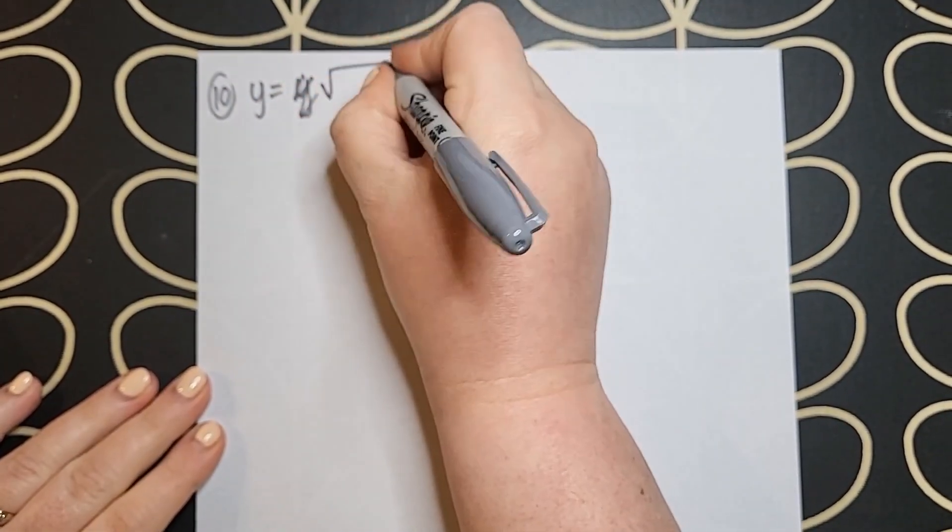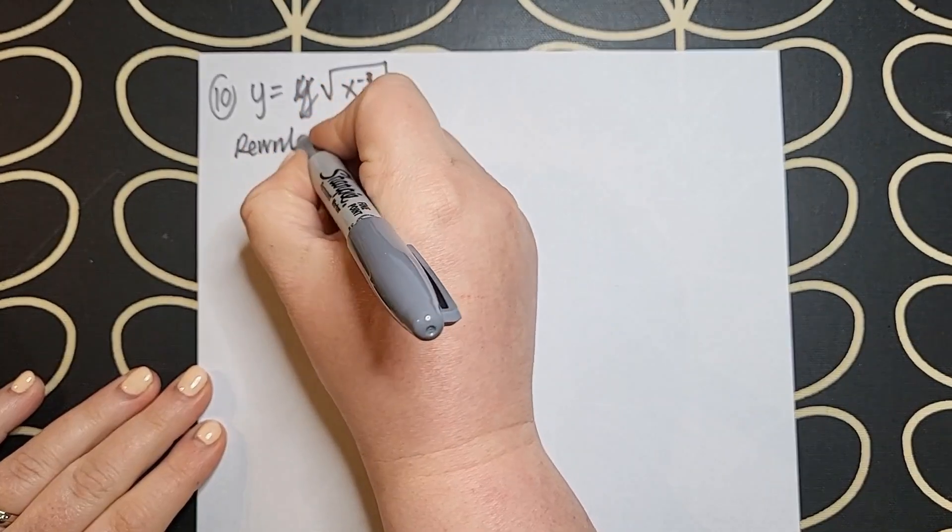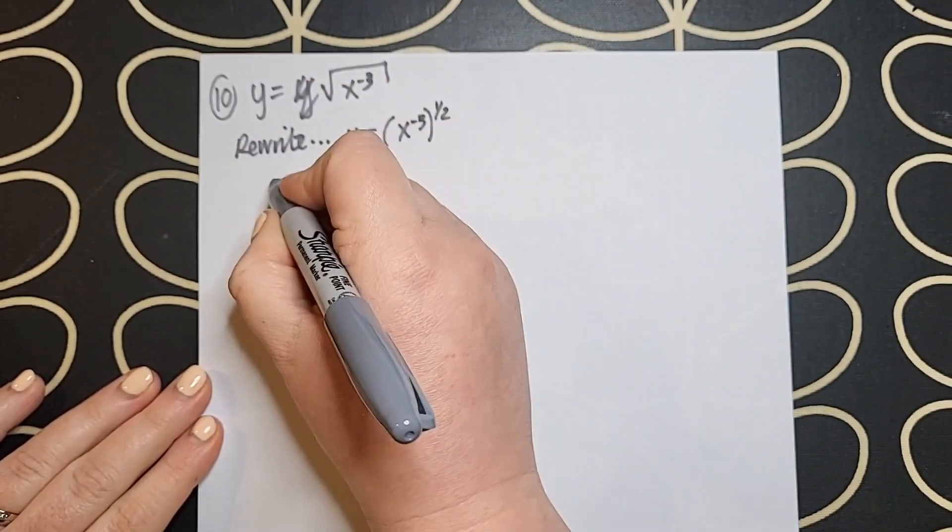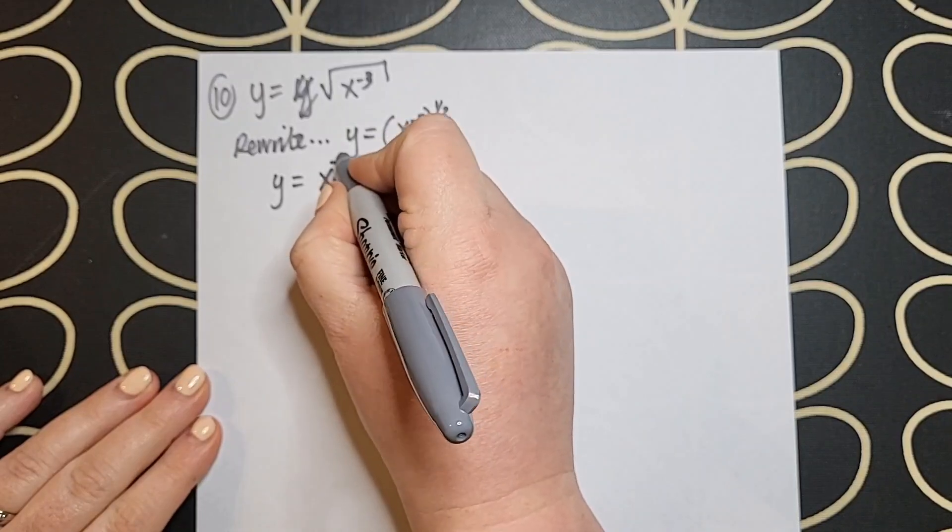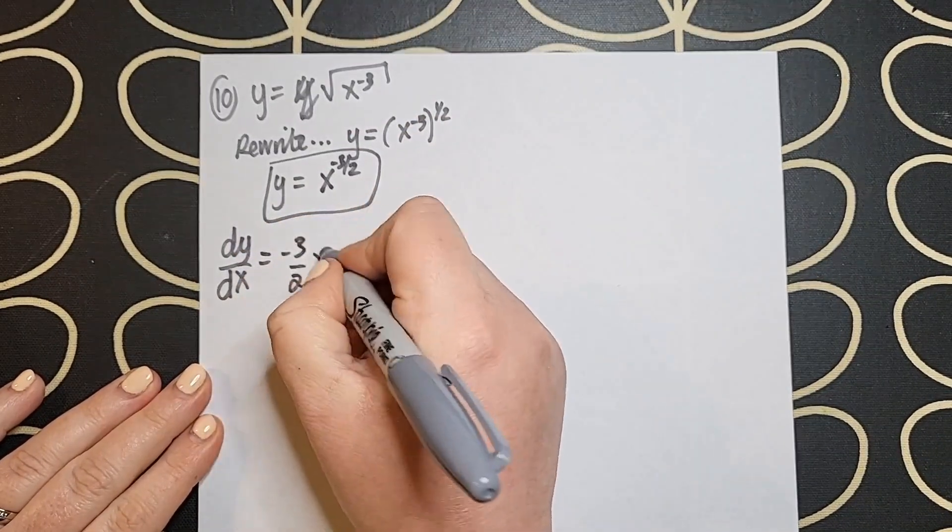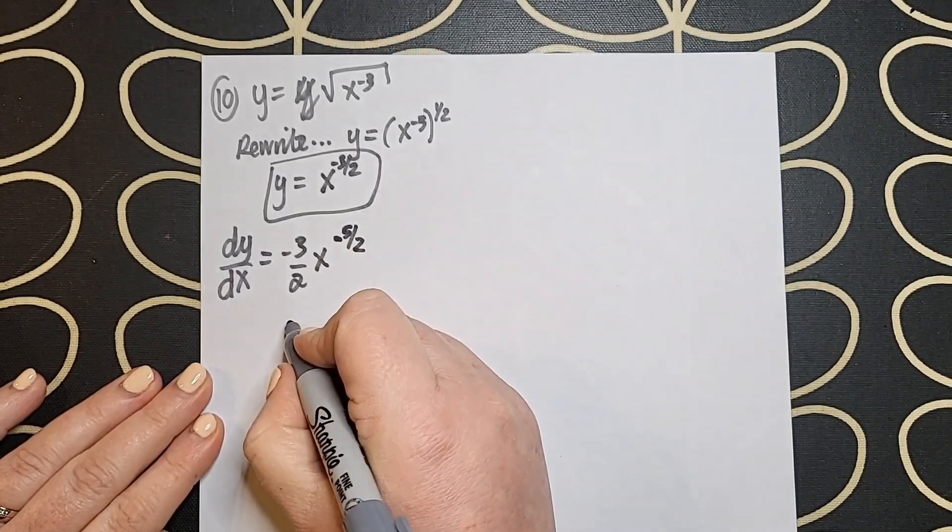Question 10 requires us to use our indices rules again so I don't want that square root there so I rewrite it as x to the power of minus three bracket to the power of a half and I use my rules of indices to simplify that out and then I just differentiate it using the straightforward rule of differentiation.